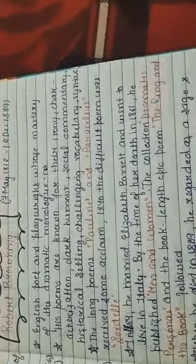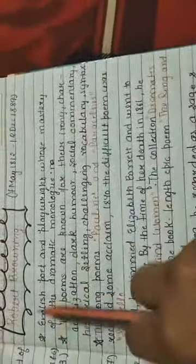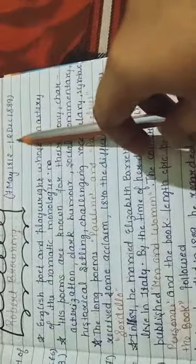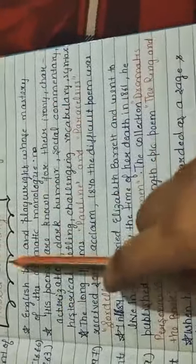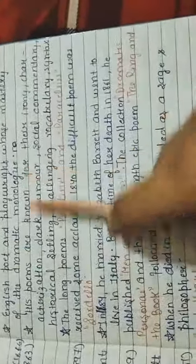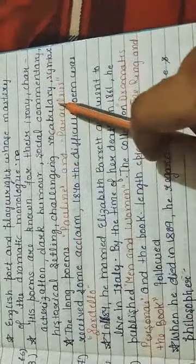Let's start. Robert Browning was born on 7 May 1812 and he died on 12 December 1889. He was an English poet and playwright whose mastery of the dramatic monologue made him popular. His poems are known for their irony, characterization, dark humor, social commentary, historical setting, challenging vocabulary, and syntax.